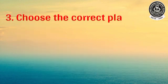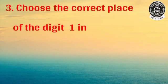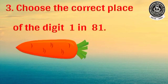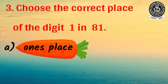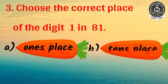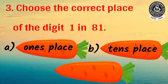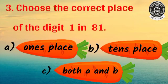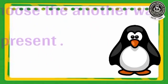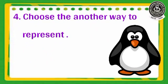Here is question number 3. Choose the correct place of the digit 1 in 81. Options are: A. 1's place. B. 10's place. C. Both A and B.